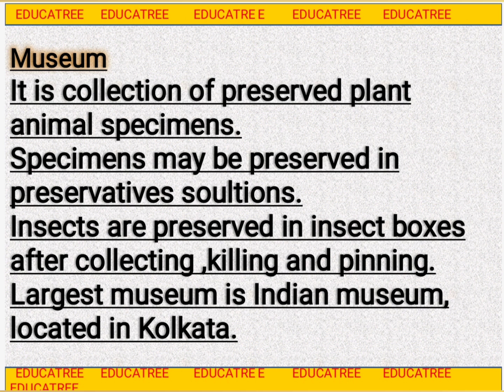The fourth taxonomical aid is museum. Museum woh place hota hai jahan par hum animal aur plant ko preserve karte hain for study purposes. Aap logon ne apni labs mein dekha hoga ki specimen ko study karne ke liye hum unko bottle mein preserve karte hain, aur usmein liquid dalete hain — woh liquid formalin hota hai jis ki bahut tez smell hoti hai.